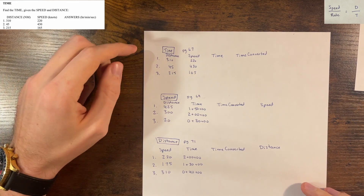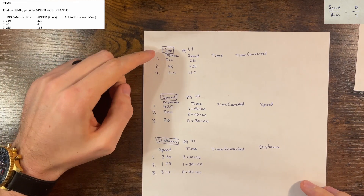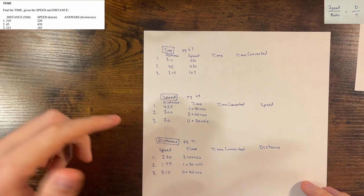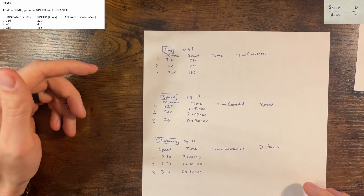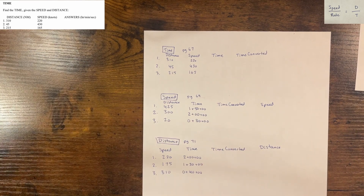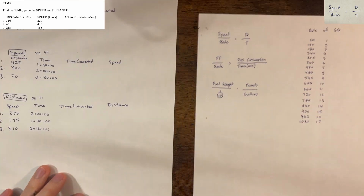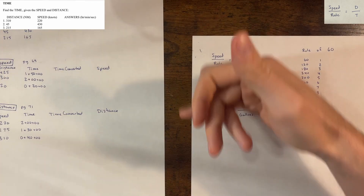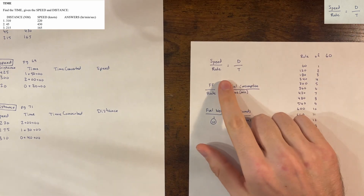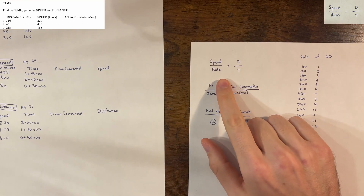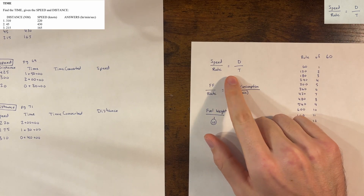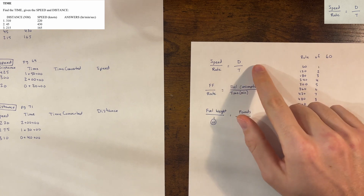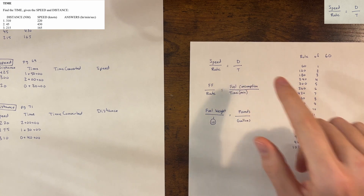All right, let's start this off. We're going to be going over time, speed, and distance problems. To start, we're going to be using this ratio at the top: speed over your rate index equals distance over time.